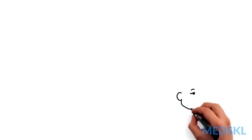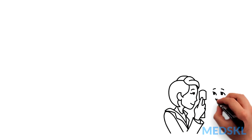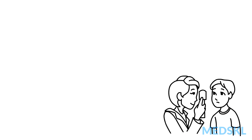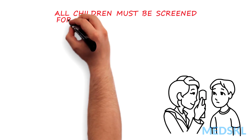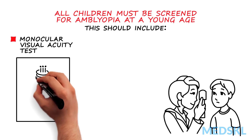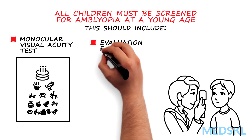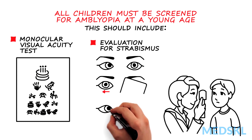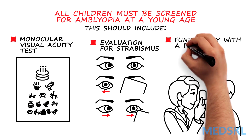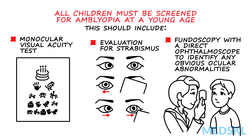The majority of children during the visual development period cannot recognize or articulate a decrease in vision in one or both eyes. Therefore, it is imperative that all children be screened for amblyopia at a young age. As a general practitioner, this should include a monocular visual acuity test, evaluation for strabismus, and fundoscopy with a direct ophthalmoscope to identify any obvious ocular abnormalities.